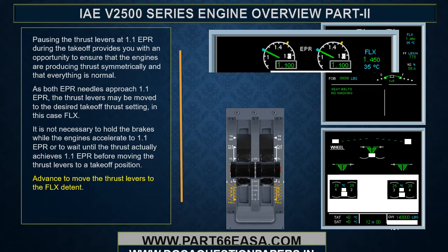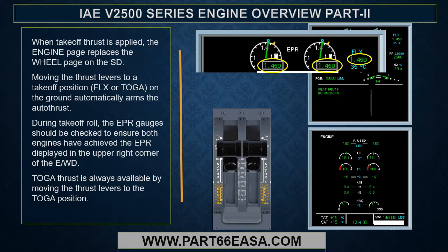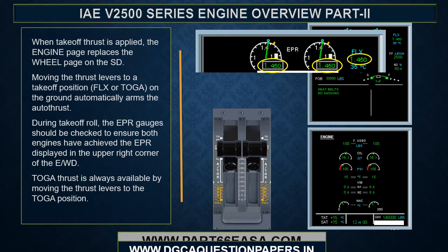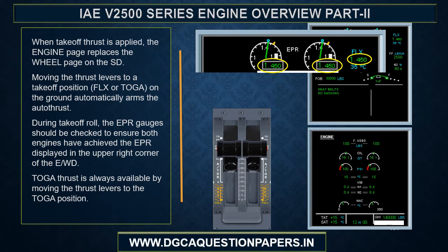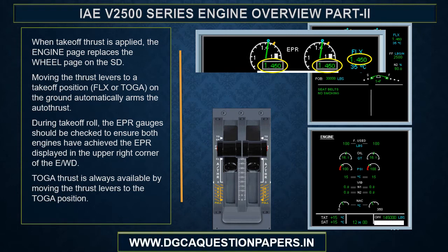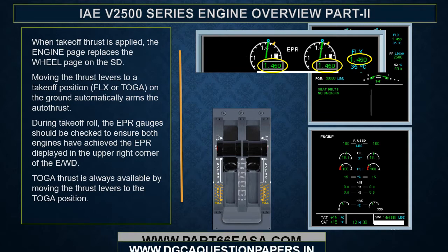Move the thrust levers to the flex detent. When takeoff thrust is applied, the engine page replaces the wheel page on the SD. Moving the thrust levers to a takeoff position — either flex or TOGA — on the ground automatically arms the autothrust. During takeoff roll, the EPR gauges should be checked to ensure both engines have achieved the EPR displayed in the upper right-hand corner of the EWD. TOGA thrust is always available by moving the thrust levers to the TOGA position.